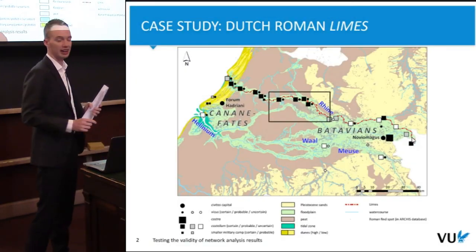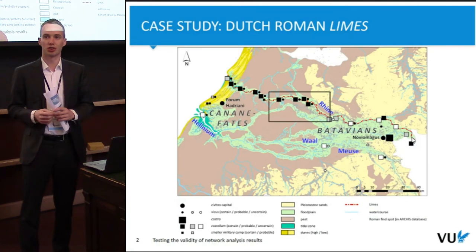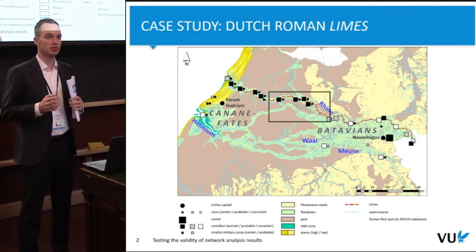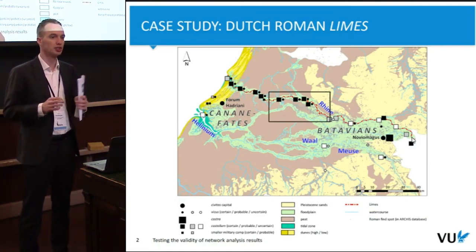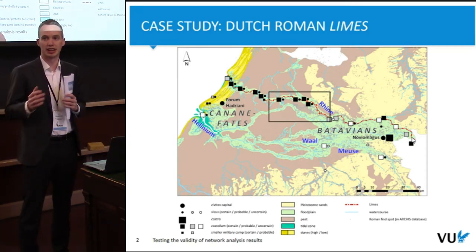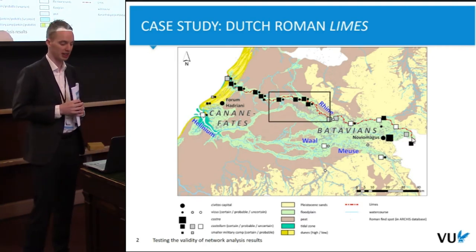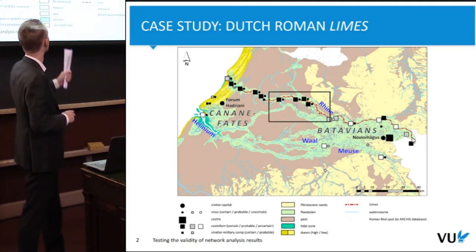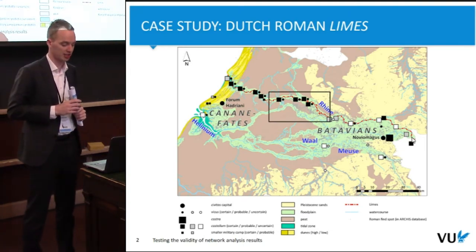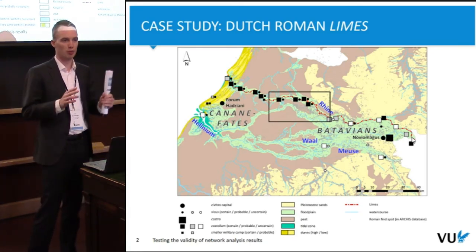Everything I will present today was done in the context of our project called 'Finding the Limes,' which focuses on the cultural landscape of the Dutch part of the Roman Limes, and more particularly the spatial relations between the rural population and the Roman military population. My presentation today focuses around a case study in the modern city of Utrecht, chronologically on the middle Roman period, roughly between 70 and 200 AD.